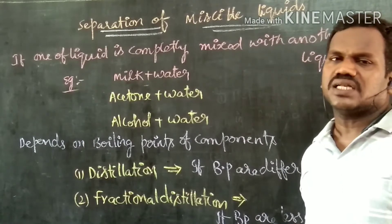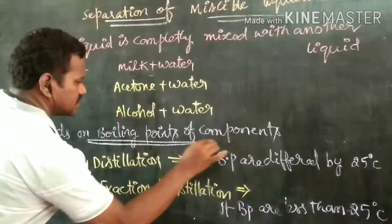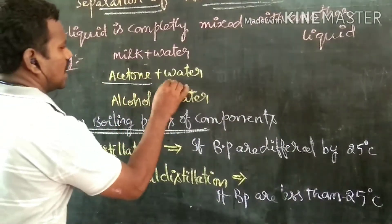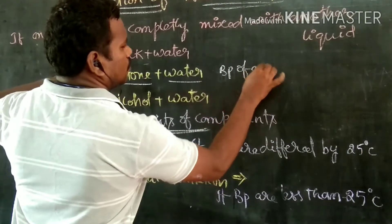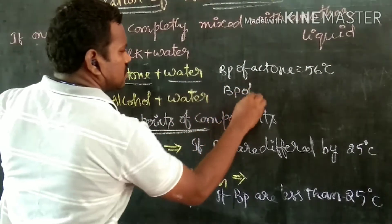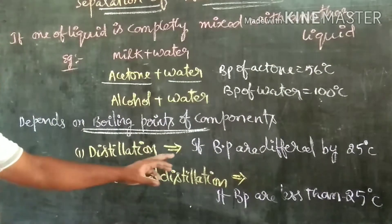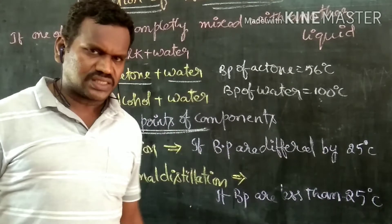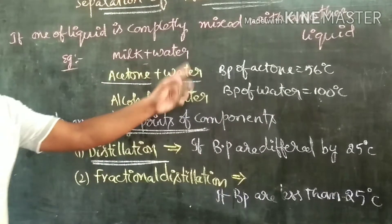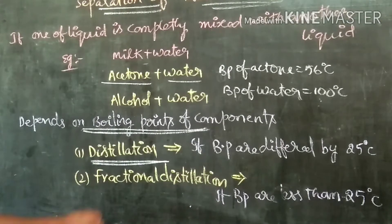Then how are miscible liquids separated? There is a need for separation. They are separated depending upon the property of boiling points, because different liquids have different boiling points. For example, acetone and water: boiling point of acetone is 56 degrees Celsius, boiling point of water is 100 degrees Celsius. The difference between the boiling points is more than 25 degrees Celsius. In that situation, we apply the method of distillation to separate the mixture. If boiling points differ by more than 25 degrees Celsius, we use distillation.